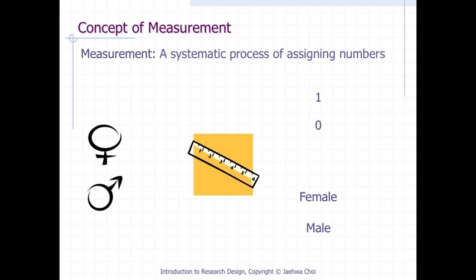The definition of measurement is a systematic process of assigning numbers. Let's think about a case measuring gender. According to this definition, we need to assign numbers onto different genders — for example, one for female and two for male — in a systematic way.